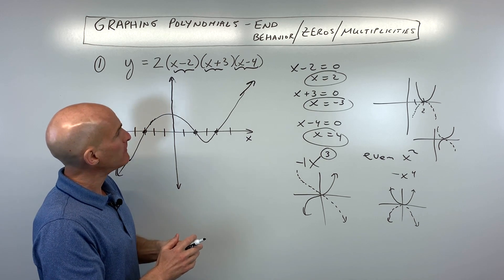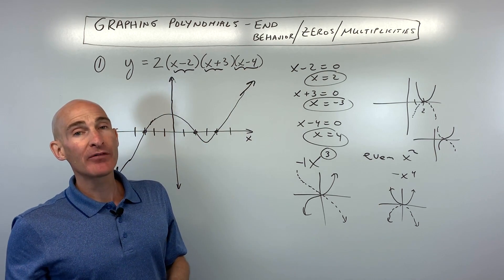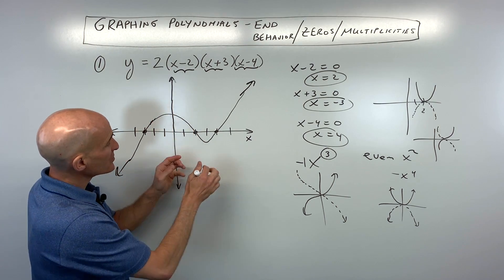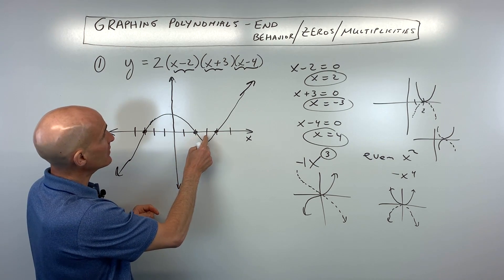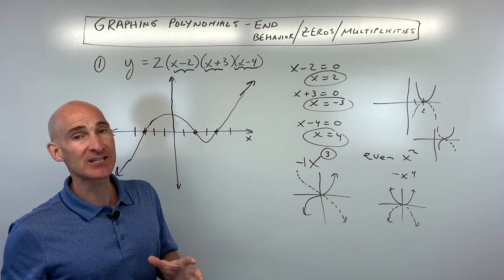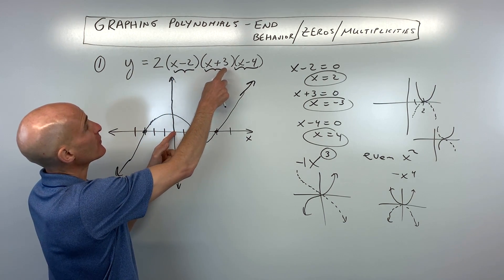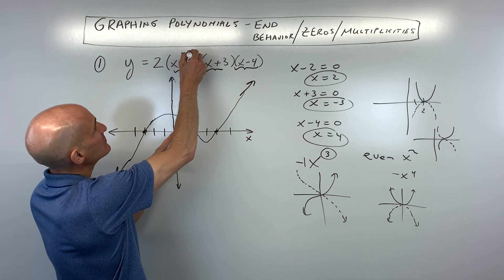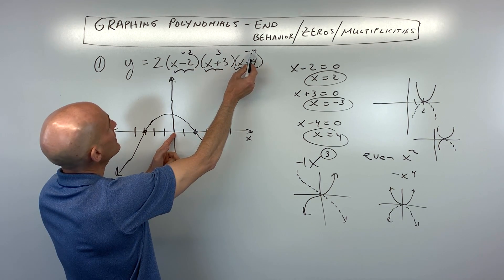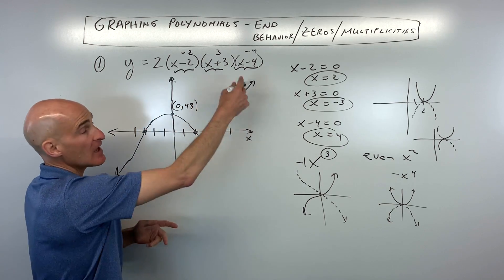You might wonder how to know how high or low the graph goes between intercepts — that's covered in calculus with extreme values and turning points. For a more precise sketch, you can plug in points between the zeros to find y-values. Also find the y-intercept by putting 0 in for x: here that gives 2 times negative 2 times 3 times negative 4, which equals 48. So the y-intercept is at (0, 48).